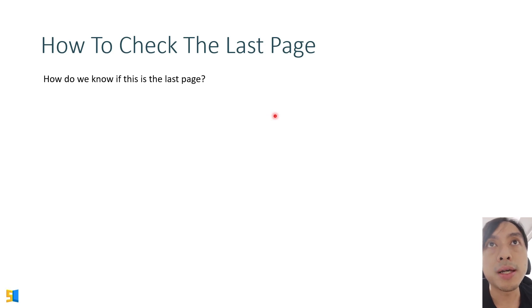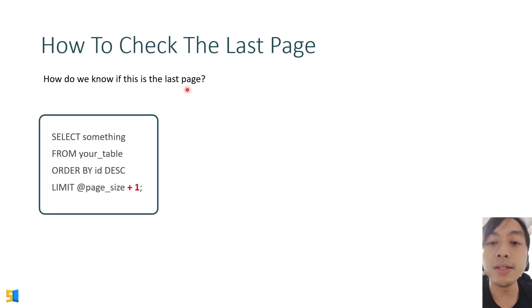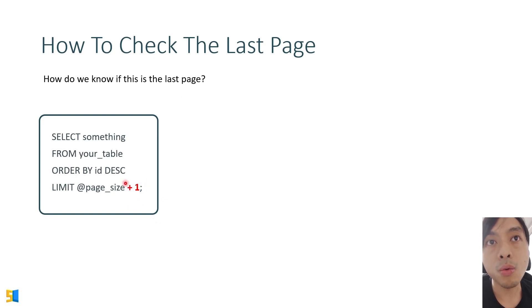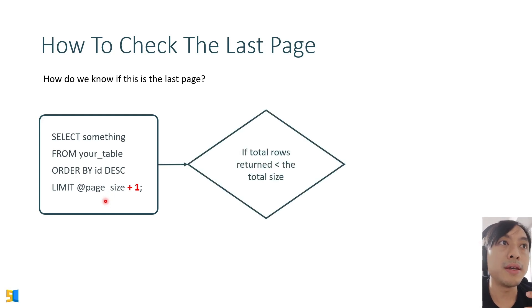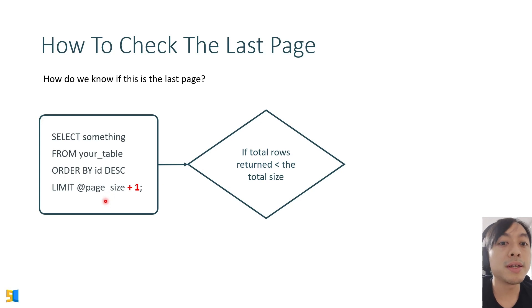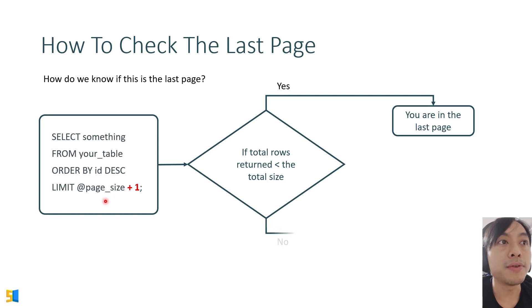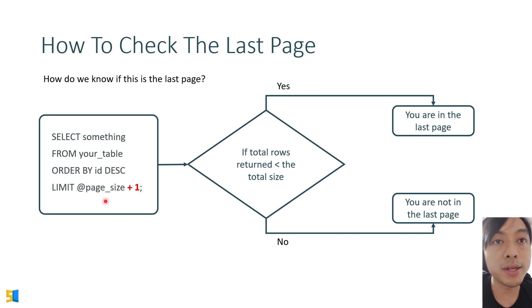Now let's see how to detect the last page. There is an easy way: add one to the page size value. If the client wants to fetch 5 items, we fetch 6 instead. If the total rows returned is less than page size plus one (6 in this case), it means we are on the last page. If not, there is data for the next page.